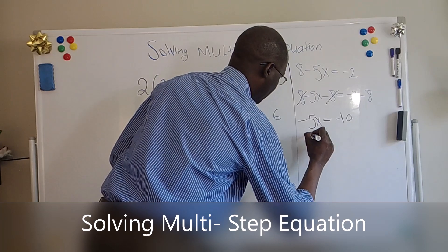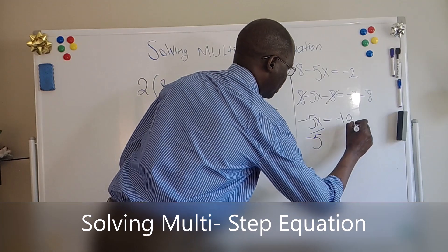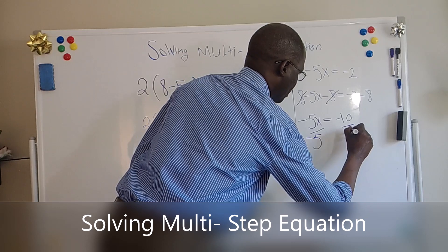It will equal minus 5X divided by minus 5 equals minus 10 divided by minus 5.